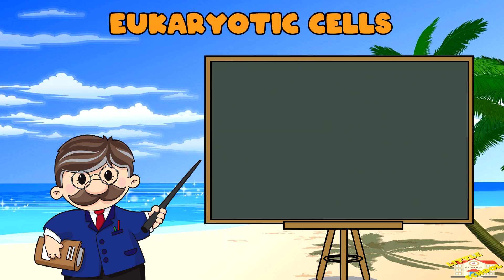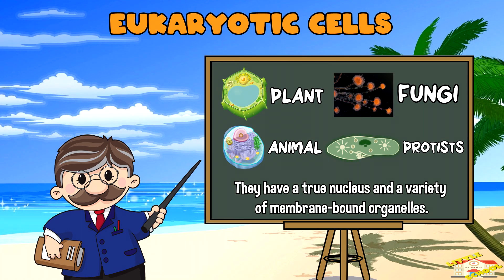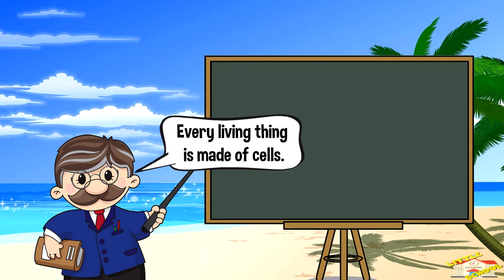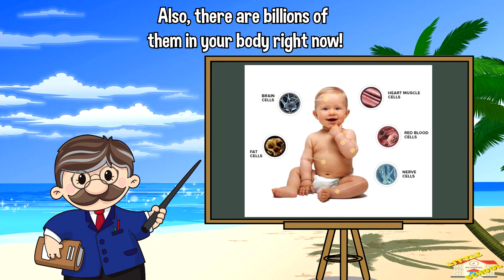Eukaryotic cells are more complex cells found in plants, animals, fungi, and protists. They have a true nucleus and a variety of membrane-bound organelles. To recap, every living thing is made of cells — plants, animals, and even tiny bacteria are all made of cells. In fact, there are billions of them in your body right now.